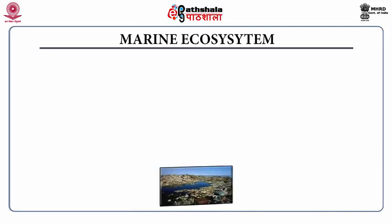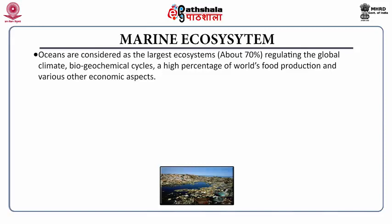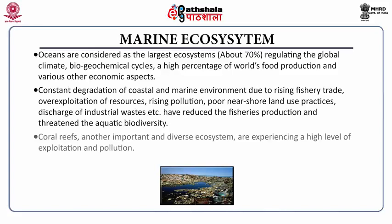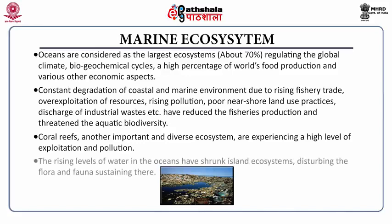Let me have a look at the marine ecosystem. Oceans are considered the largest ecosystem because 70% of the earth is covered by oceans and seas. They regulate the global climate, biogeochemical cycles and a high percentage of the world's food production. Constant degradation of coastal and marine environments due to rising fisheries trade, overexploitation of resources, rising pollution, poor nearshore land use practices and discharge of industrial waste have reduced fisheries production and threatened aquatic biodiversity. Coral reefs are experiencing high levels of exploitation and pollution. Rising ocean water levels have shrunk island ecosystems, disturbing the flora and fauna sustaining there.